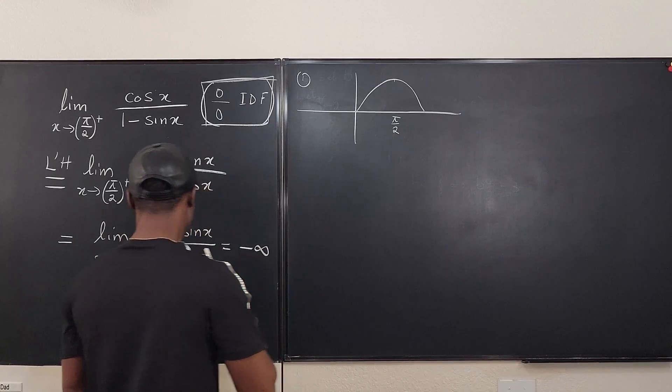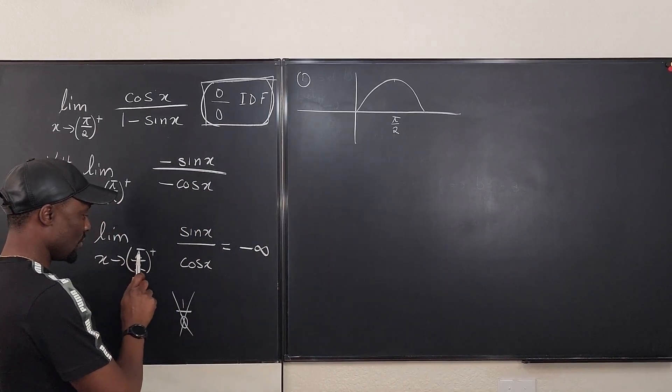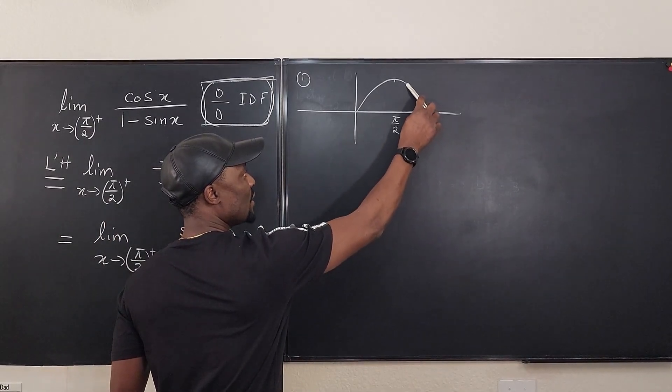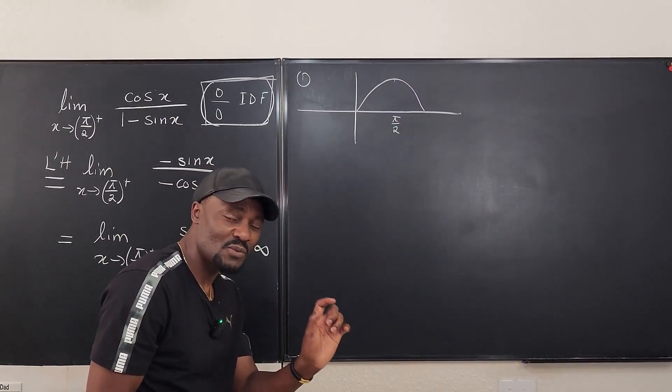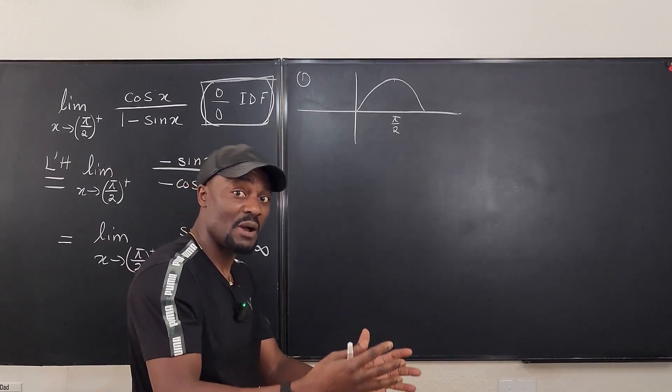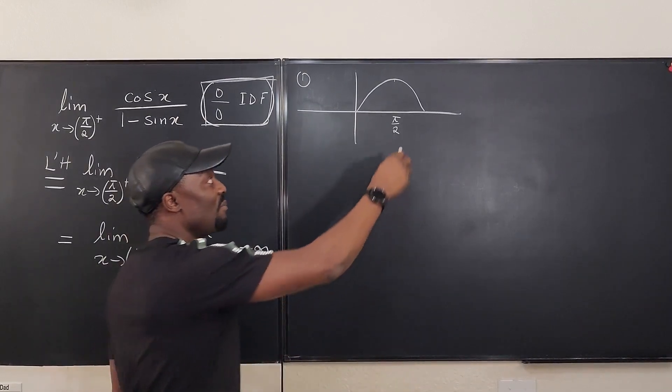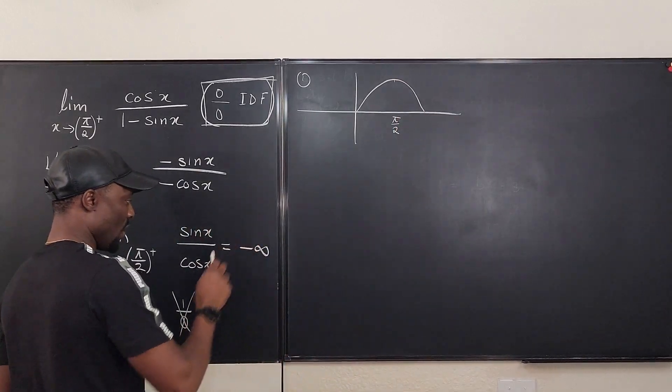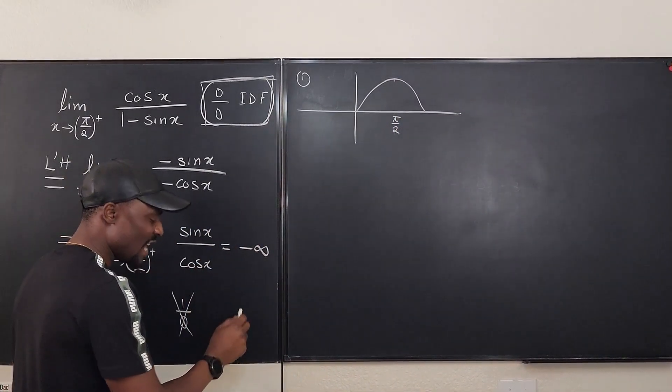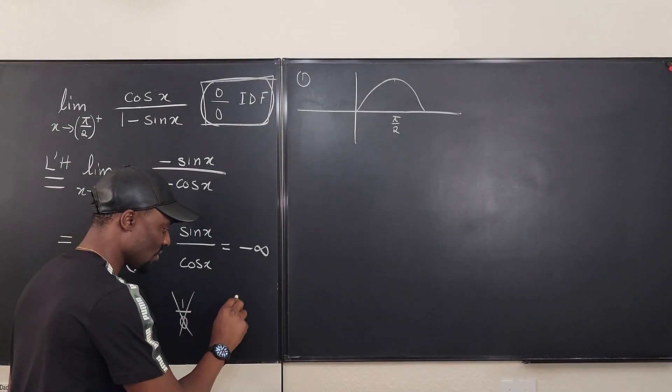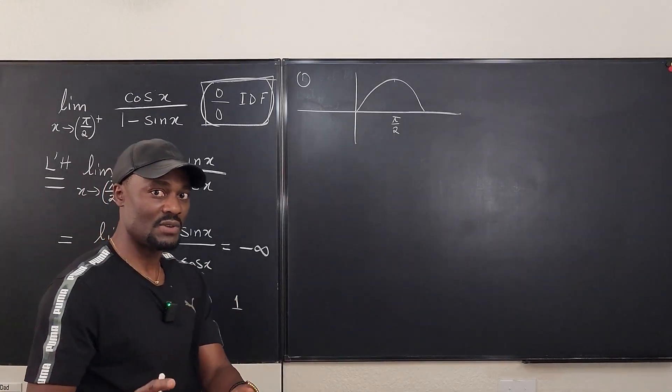So, as x approaches pi over 2 from the right, it is going toward 1. It is still slightly less than 1, but it's a positive number. Right? It's coming from the right. It's a positive number approaching 1. So what we have here is a number that is slightly less than 1, but it's approximately 1. So let's just take it to be 1, but it's a positive number.